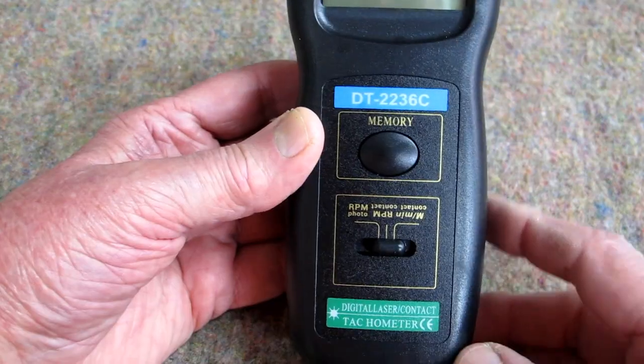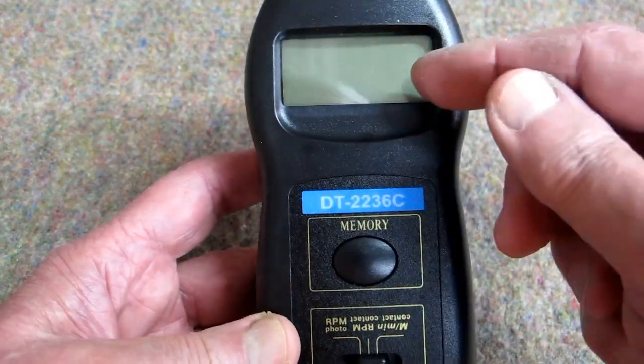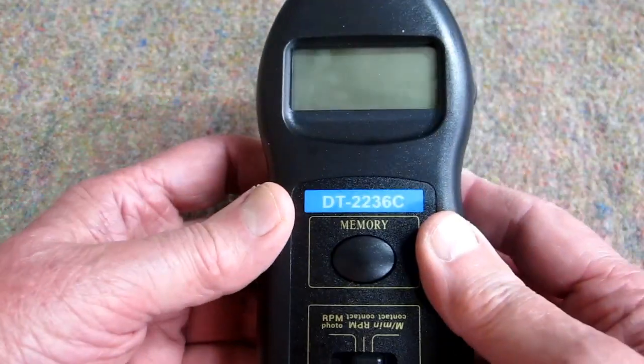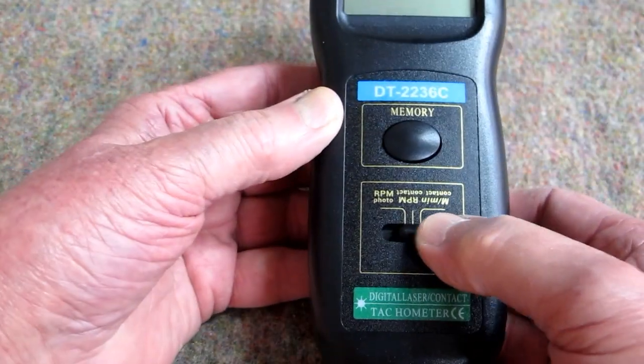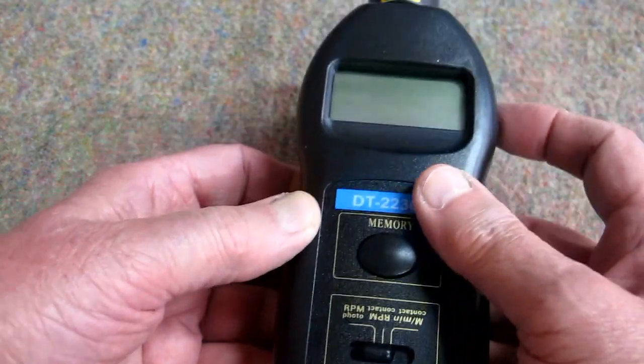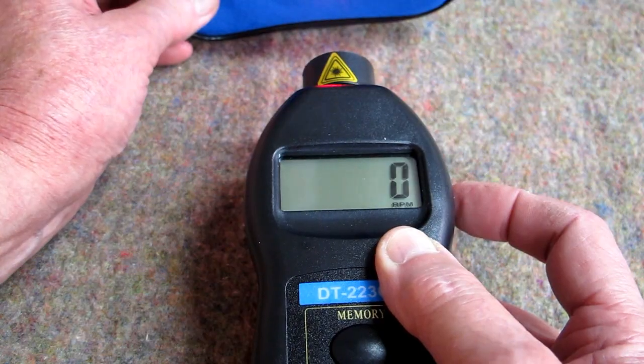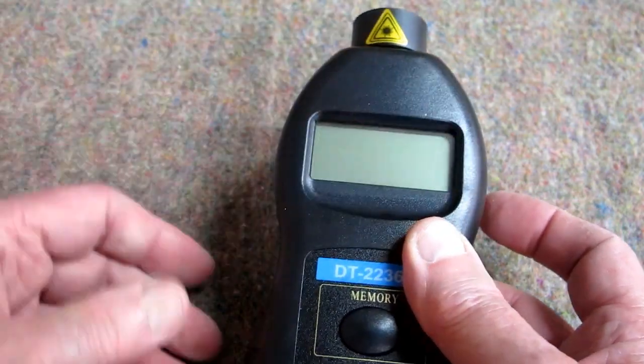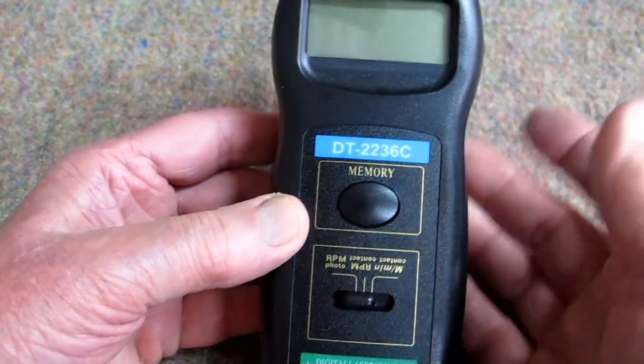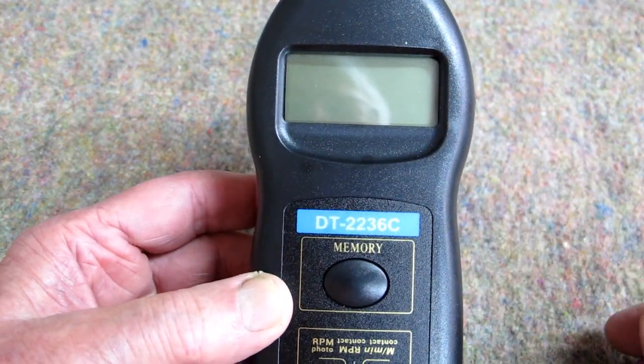This is the DT2236C. And this display works in two different positions. When you're holding it like this, you slide this over to RPM Photo. And this button turns on the laser. It will give you a reading. And then when you let go of the button, you push memory and it will tell you what the last RPM was.